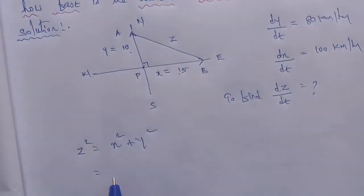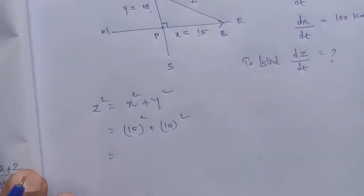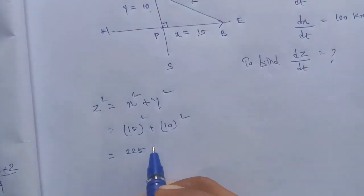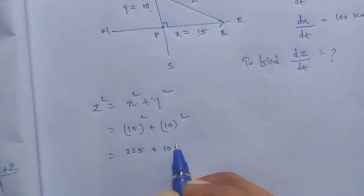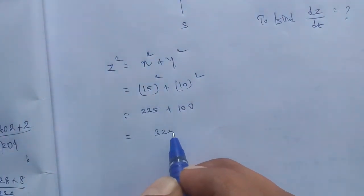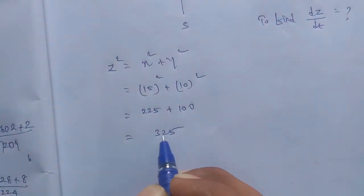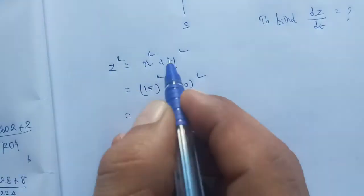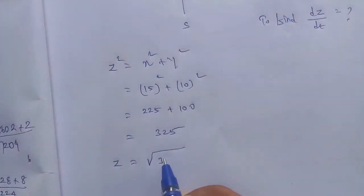x value is 15, so 15 whole square, and y value is 10, so 10 whole square. 15 square is 225 plus 10 square is 100. Therefore, z square is equal to 325.